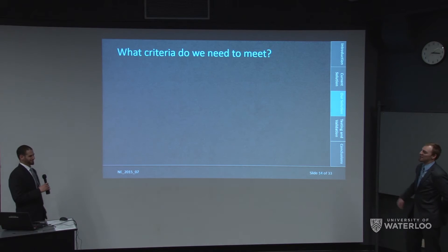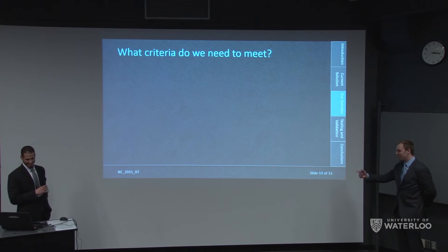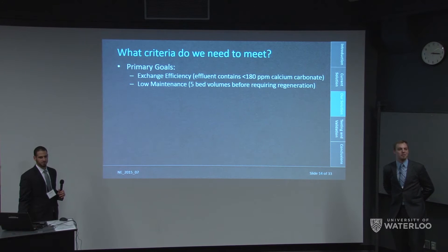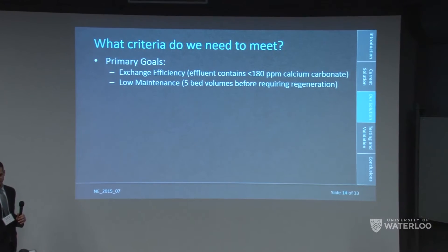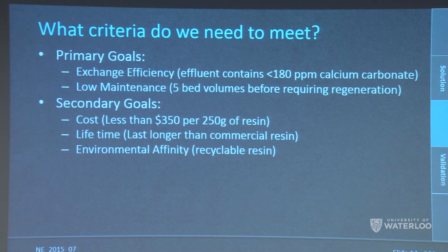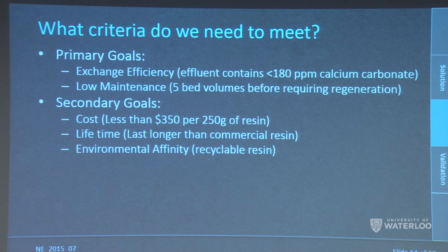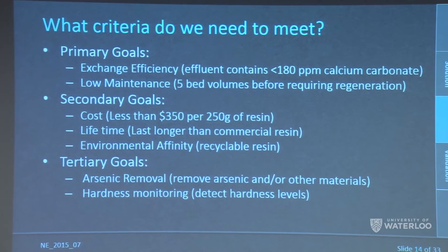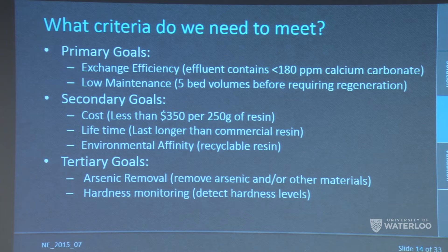Our project criteria: primary goals include exchange efficiency — we want to confirm we are actually softening the water — and maintainability, targeting five bed volumes before requiring regeneration. Secondary goals include cost effectiveness, appropriate resin lifetime, and biodegradability. Tertiary goals include the ability to exchange other unwanted materials from water and real-time monitoring of water quality.